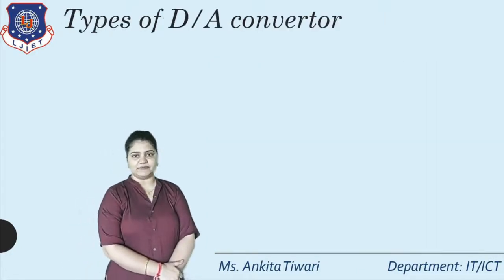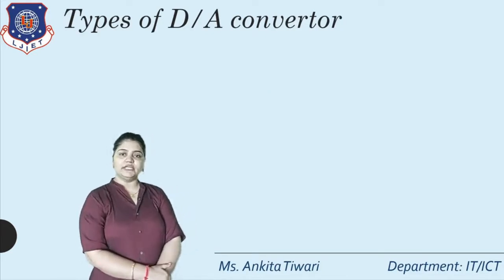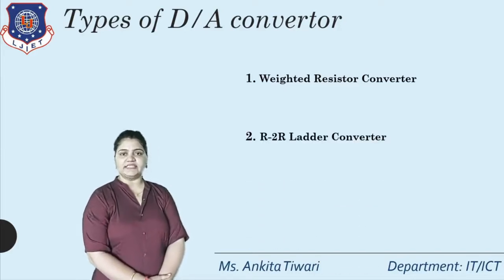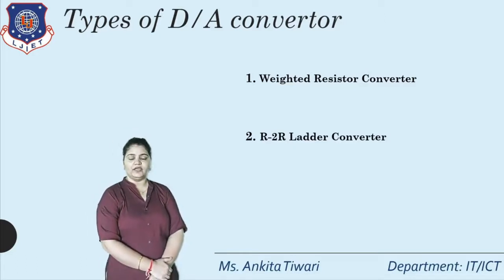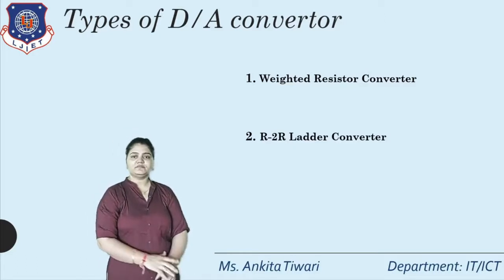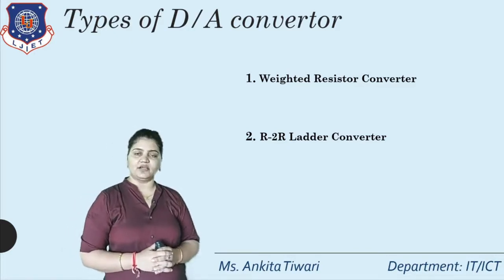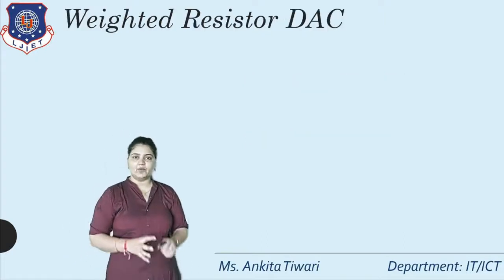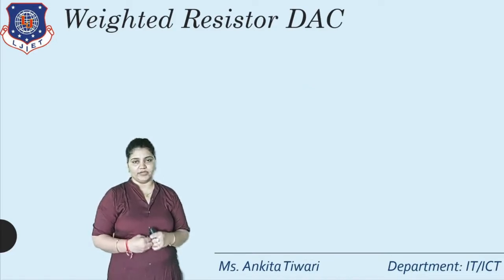When talking about types, we have two types of D to A converters. The first is the weighted resistor converter and the second is the R to 2R ladder converter. In this session, we are going to cover only the first one — the weighted resistor converter — in depth.